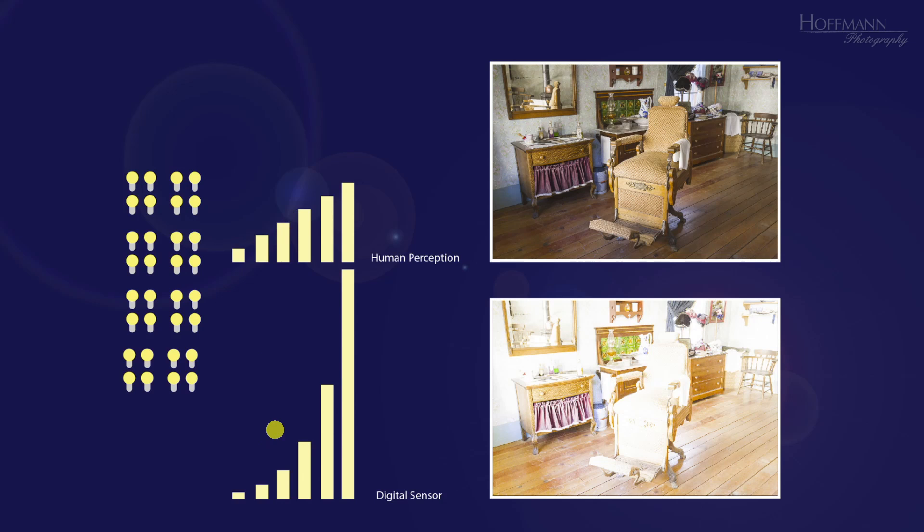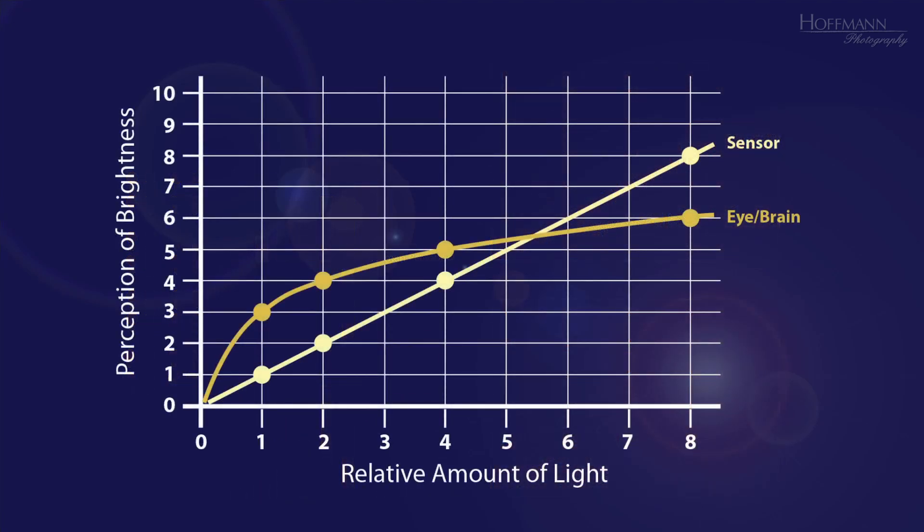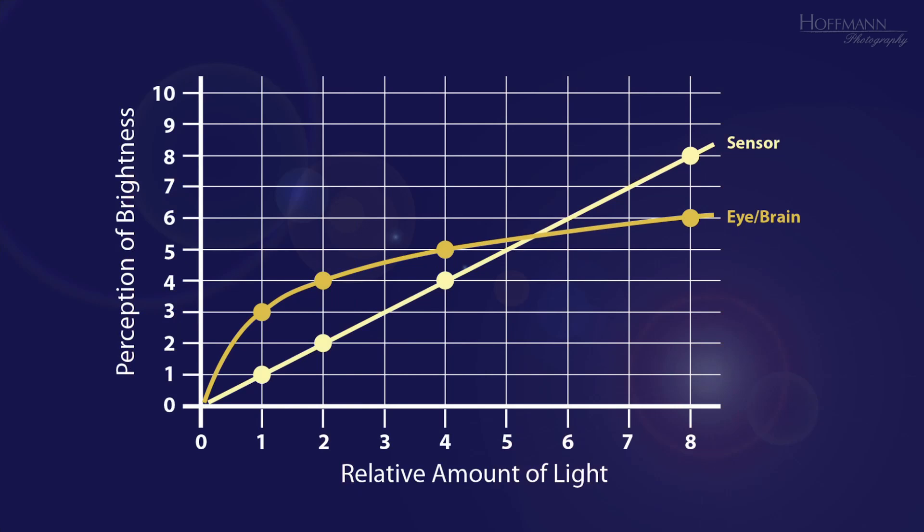When we look at the vertical bars representing the brightness perception of the human eye, they look like a linear relationship. While the bars of the brightness perception of the sensor look decidedly non-linear. But that is quite wrong. This graph shows what is actually going on. The data points are at 1, 2, 4, and 8, corresponding to the doubling of the amount of light. And then it becomes clear that a sensor reacts in a linear fashion, while our eyes react logarithmically.